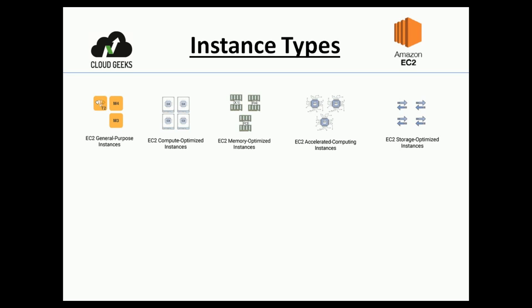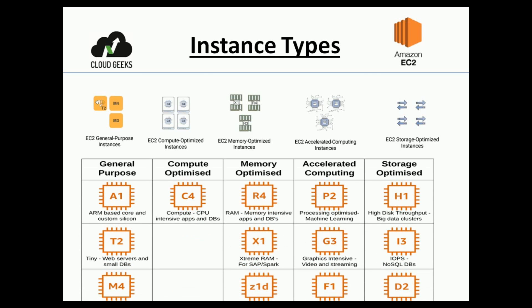There will also be some sub-types of the five specific instance types. In general purpose there are A1, T2, M4; for compute optimized there is C4; for memory optimized there are R4, X1, and so on. You don't have to worry about all of them — these are just for reference. They are not important for AWS interviews or certifications at the developer or associate architect level.